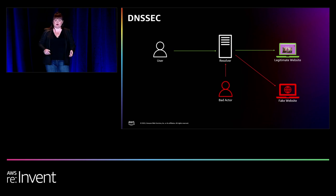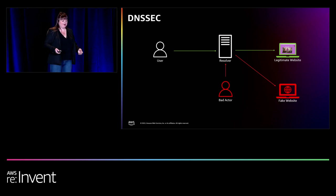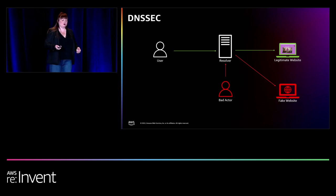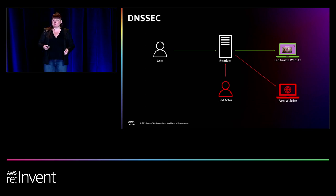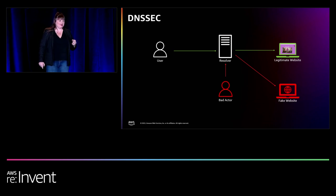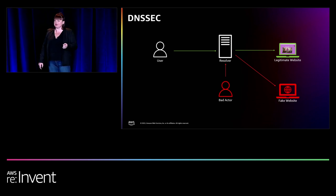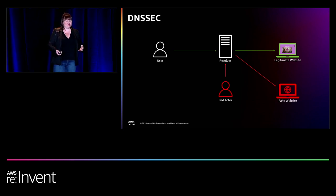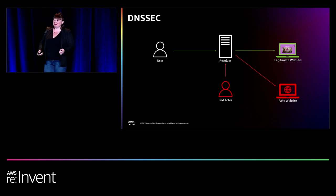Coming back to AWS and Route 53 — when you use DNSSEC signing, it lets a resolver confirm that a result came from Route 53 and has not been tampered with. Every result from a hosted zone is signed using public key cryptography. DNSSEC adds another record type called RRSIG — Resource Record Set Signature — which is essentially like the signature of that A record, signed using public key cryptography.